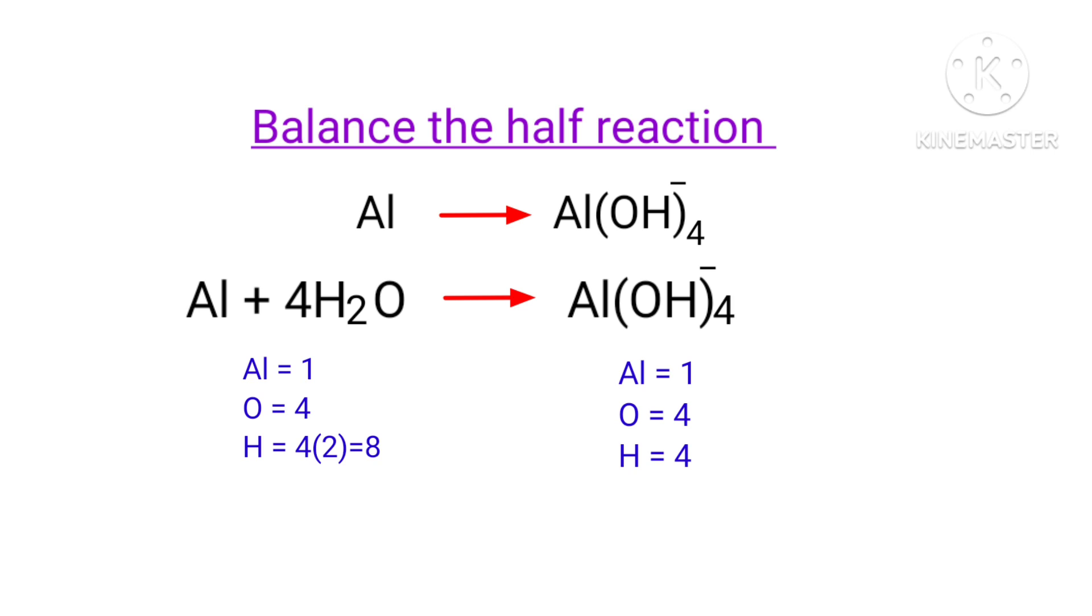Now we can balance the hydrogen atoms. To do this, you can produce H⁺ ions. Now the number of atoms are balanced on both sides.